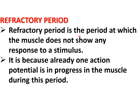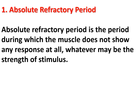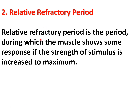Refractory period is the period at which the muscle does not show any response to a stimulus, because an action potential is already in progress in the muscle during this period. The muscle is unexcitable to further stimulation until it is repolarized. Refractory period is of two types: absolute refractory period and relative refractory period. Absolute refractory period is the period during which the muscle does not show any response at all, whatever may be the strength of stimulus. Relative refractory period is the period during which the muscle shows some response if the strength of the stimulus increases to maximum.